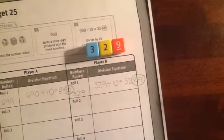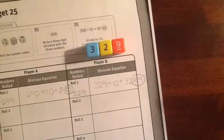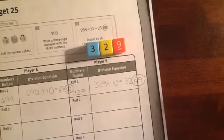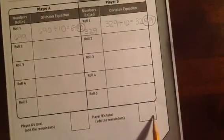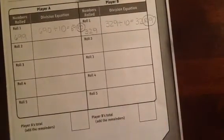So having my biggest number in the ones place could be my strategy. And again, in order to complete the game, you add all of your remainders at the end and try to get as close to 25 as you can without going over.